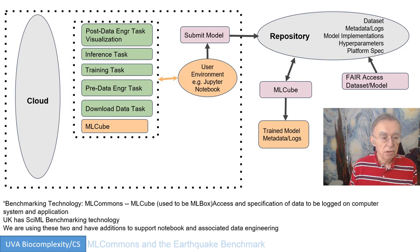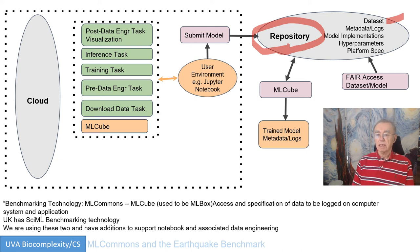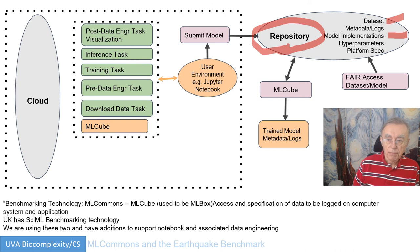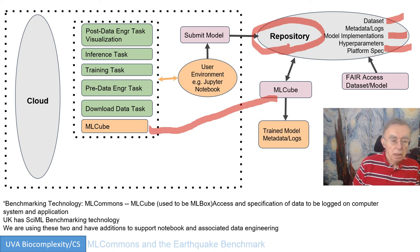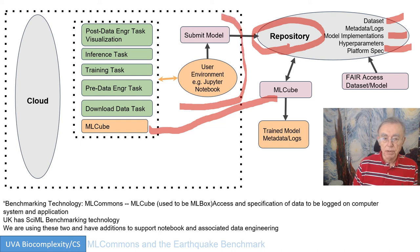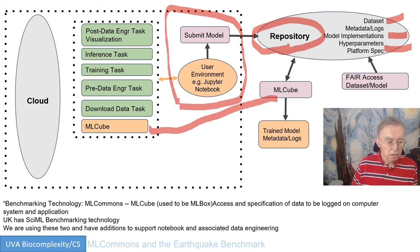Here is a slide on the software environment we want to try to generate. We're going to have some repository which has the datasets, the metadata — with hopefully FAIR access — the model stored, the hyperparameters specified, and the platform specified. Then you have to run this all on the cloud. You can use MLCube here to fetch the data automatically from the repository. In this case we're assuming a Jupyter notebook, which is what we use for earthquakes to control the system, but most submitted results will run in batch mode just by submitting the job to a queue. The UK collaborators led by Tony Hay have a CIML benchmarking technology which is competitive to MLCube and may actually be more powerful.